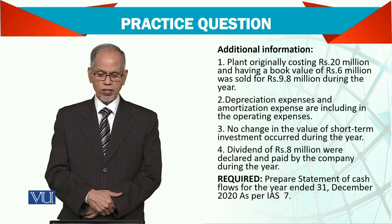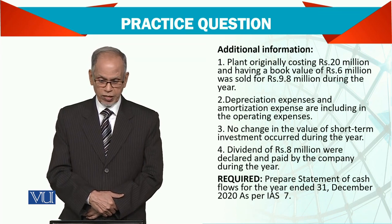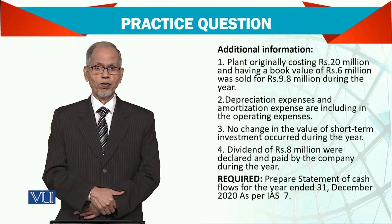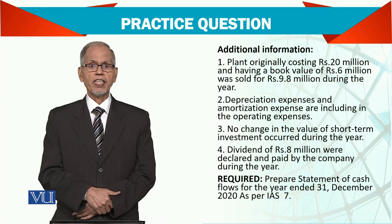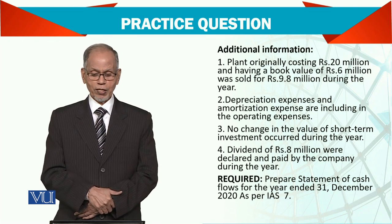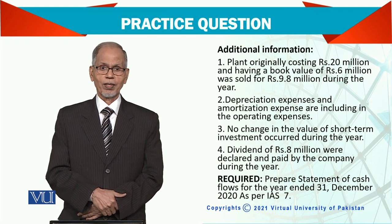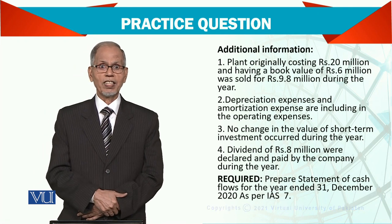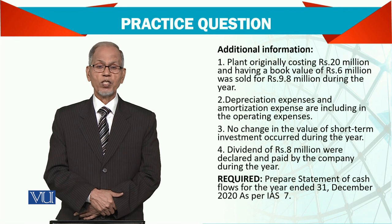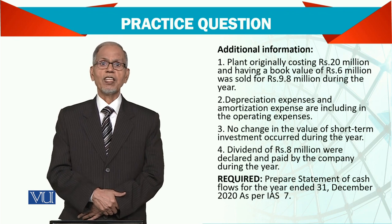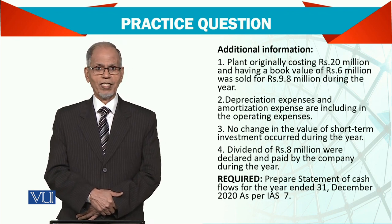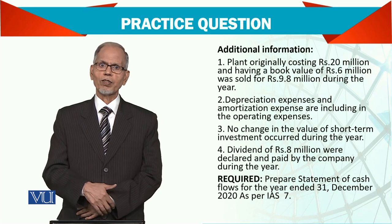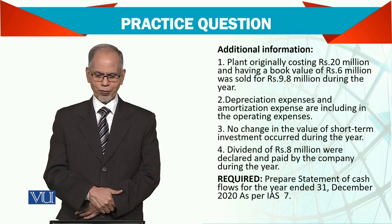Dividends of 8 million were declared and paid by the company during the year. It is clearly given that we have paid, so it is an outflow, and that outflow will be reported as a financing activity because it is paid to the shareholders. If there is a dividend received — say you have invested somewhere and received dividend income — that income will normally be reported in operating activity, but alternatively it can be reported in investing activities because it arises out of investing activities.